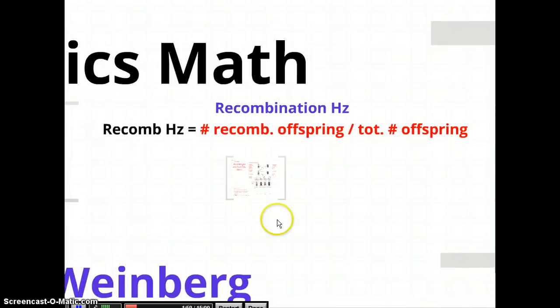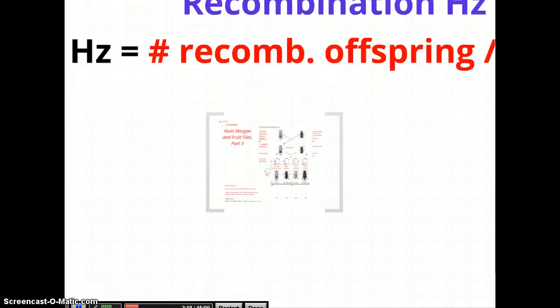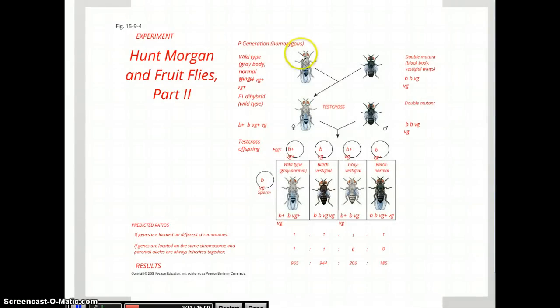All right. When you ask a question about recombination frequency, this is looking at the frequency with which genes will be switched from chromosome to chromosome. Really easy to find that number. All you do is take the number of recombinant offspring, offspring with combinations of traits different from the parents, and divide that by the total number of offspring. So we saw that with Hunt Morgan's fruit fly experiments.